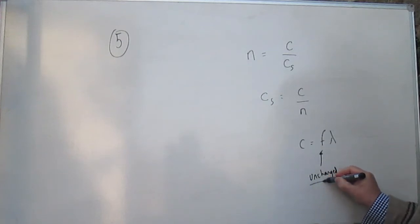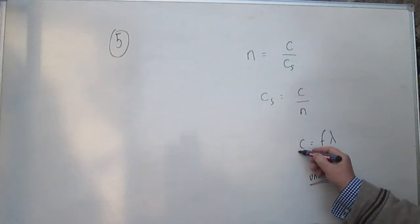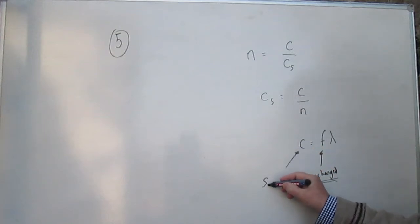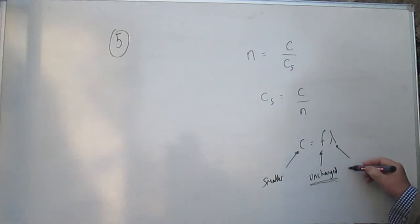Okay, so when light passes from one medium to another, its frequency doesn't change, because the frequency is determined by the source. And it doesn't change as the light moves in whatever way it moves after that.